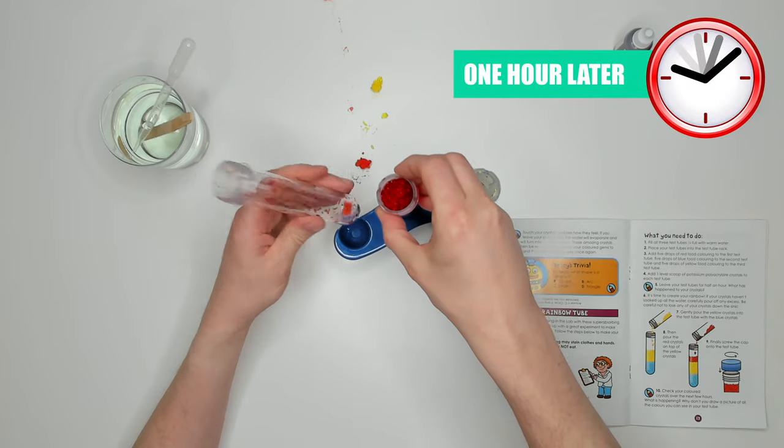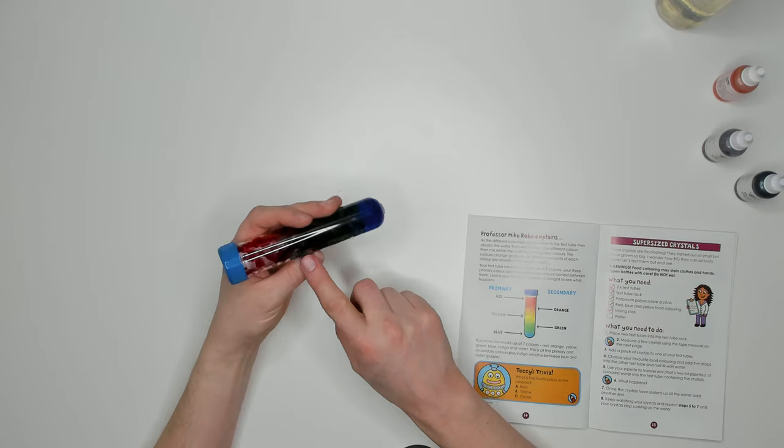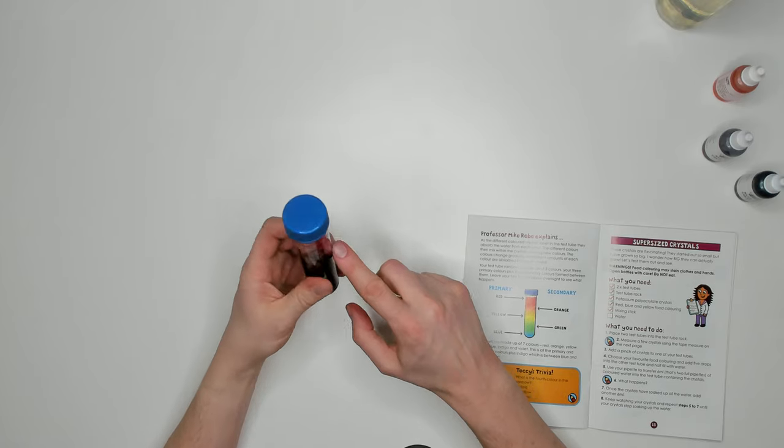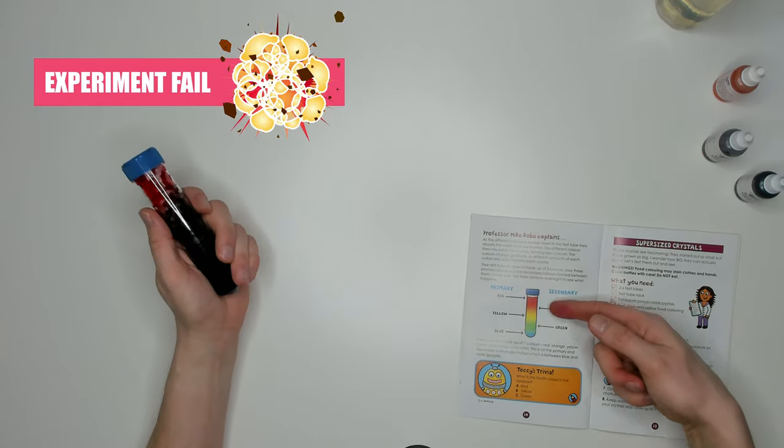One hour later. The colors have blended together a little. You can kind of see the blue, green, yellow, orange, red but it's certainly not as clear as the illustration in the experiment book. I'm going to say experiment fail for this one.